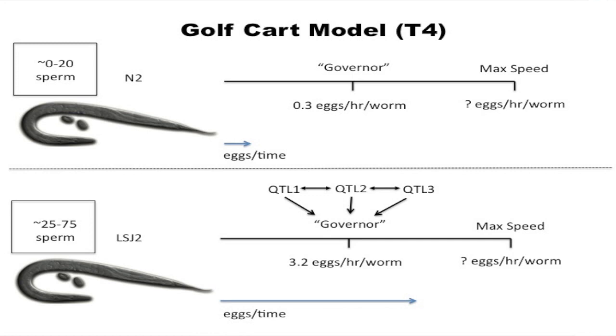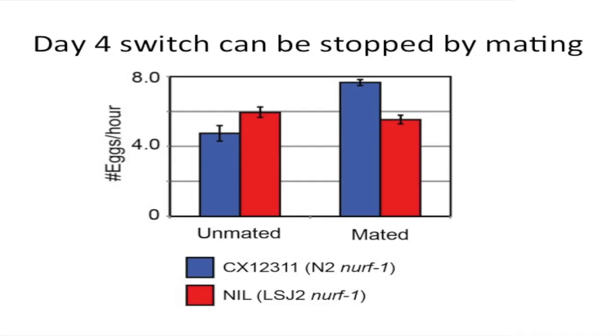To test this, we took advantage of the fact that C. elegans can also produce males that mate with hermaphrodites, transferring sperm to artificially increase sperm number. On day four, N2 and LSJ2 alleles of NERF1 lay about the same amount in unmated animals, but after mating they recover the large difference, with N2 allele laying at a much higher rate. This is at least consistent with our sperm depletion model.